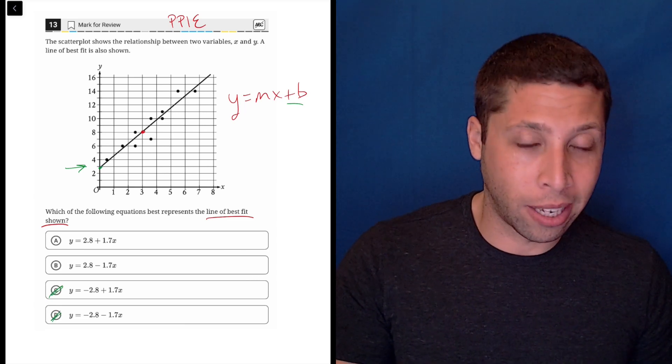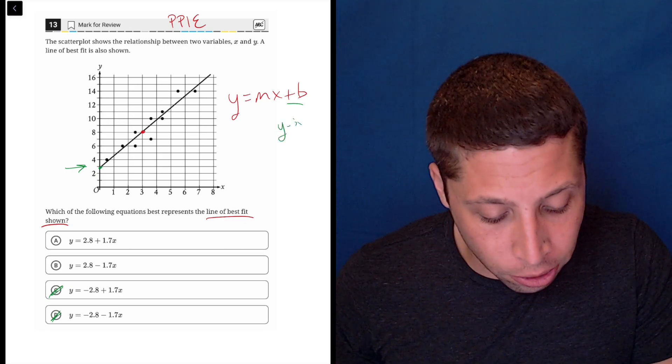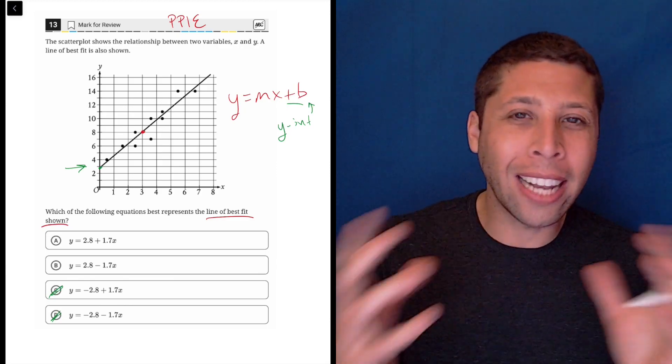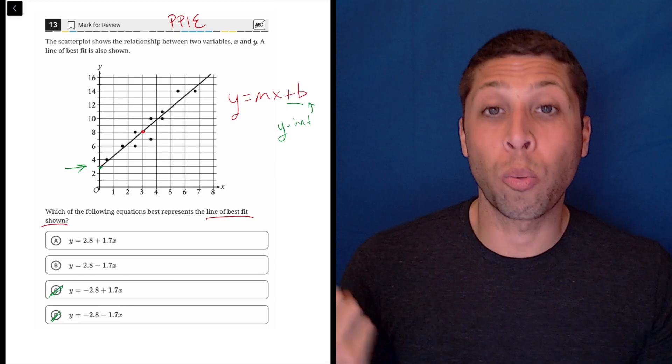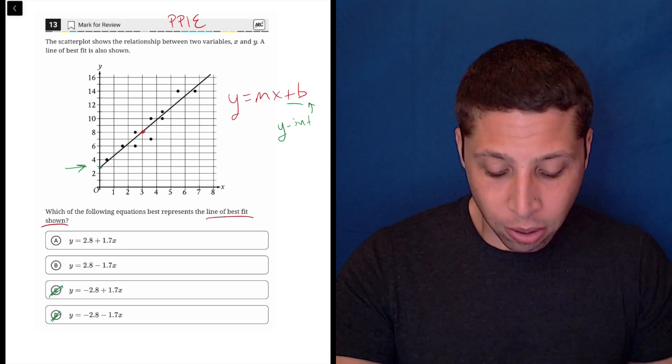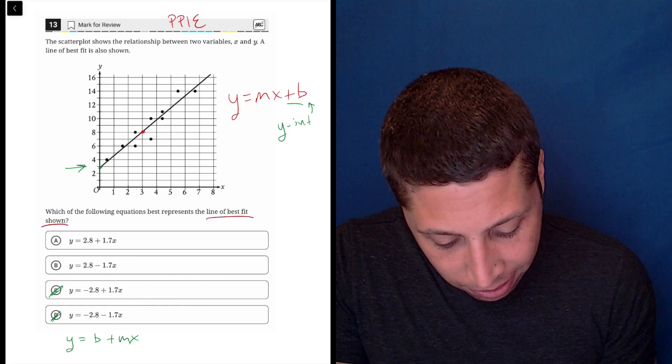And notice what they did to twist things up. We think of y equals mx plus b with the y-intercept as the second component. But because we're just adding these two things, we can move them and swap them. Addition and subtraction work that way, you can change the order. And so that's what they did here, they really just rearranged these as y equals b plus mx.